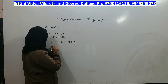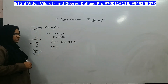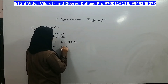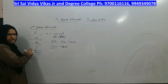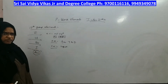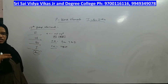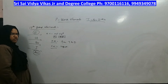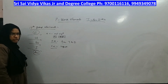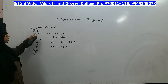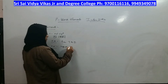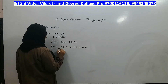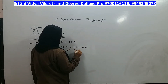Electronegativity is highest for fluorine and it decreases down the group. Fluorine has the highest electronegativity not just in this group, but in the entire periodic table. This means that fluorine, when it combines with any element, will behave as a negatively charged ion, and whatever combines with fluorine becomes positive — that is because of its high electronegativity.